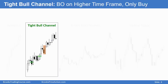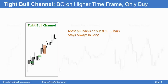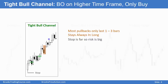However, the pullbacks are usually brief — one, two or three bars. Sometimes they're simply sideways and it's very difficult to make money selling. So just like a breakout, traders should only look to buy. The market's clearly always-in-long. If you had to be in the market, you should only be long. Just like with a breakout, the stop is far below, so no matter where you buy and for whatever reason you buy, your risk is great.